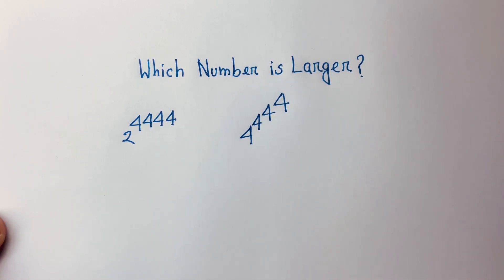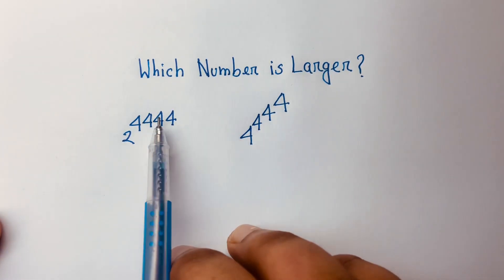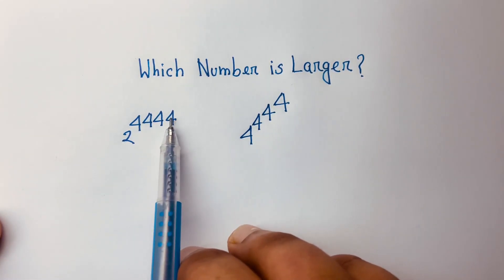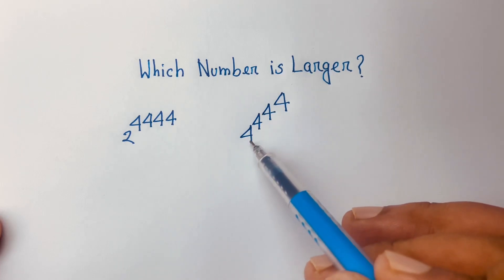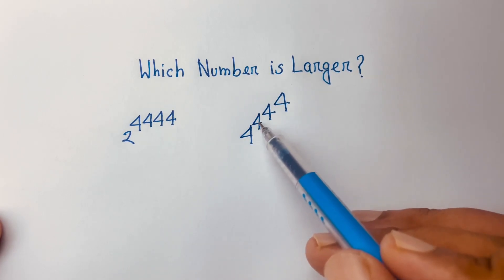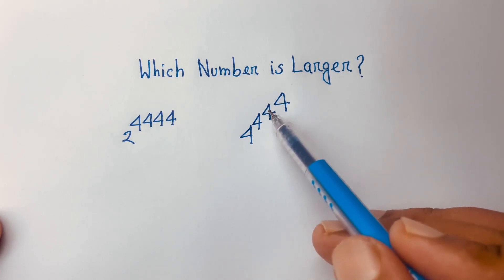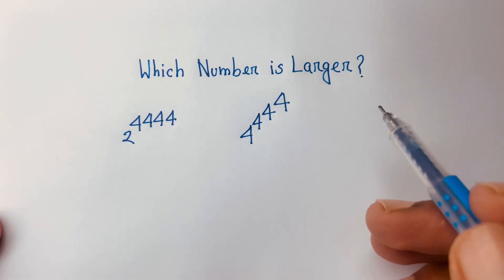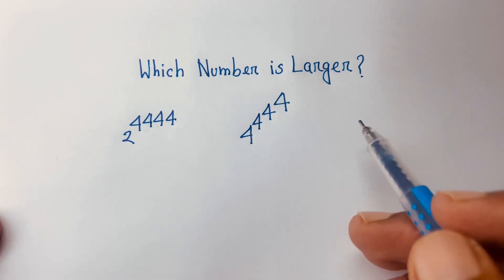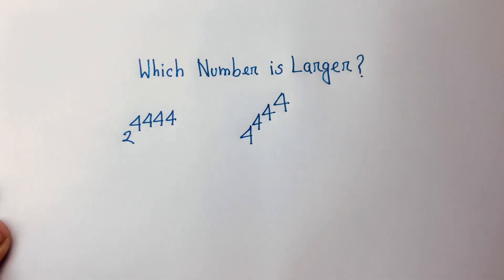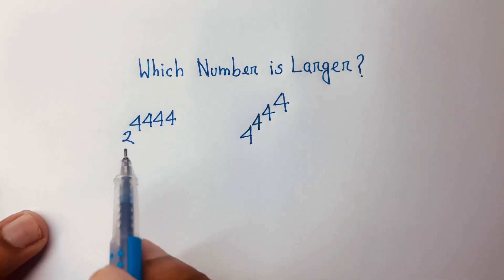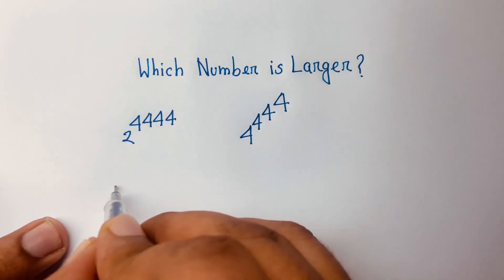Which number is larger? Here is 2 to the power 4, 4, 4, 4 — a power tower of 2s — and here is 4 to the power 4, power 4, power 4 — a power tower of 4s. First of all, I can express the 2 side using a square root.